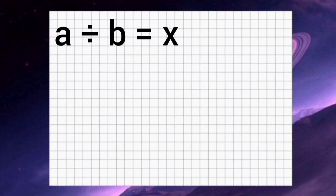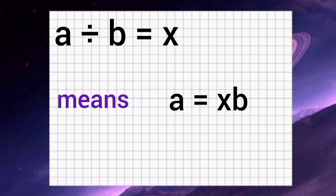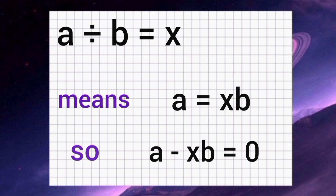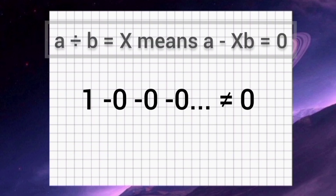A divided by B equals X means A is X multiplied by B. So, A minus X multiplied by B equals zero. But one minus zero minus zero minus zero couldn't equal zero.